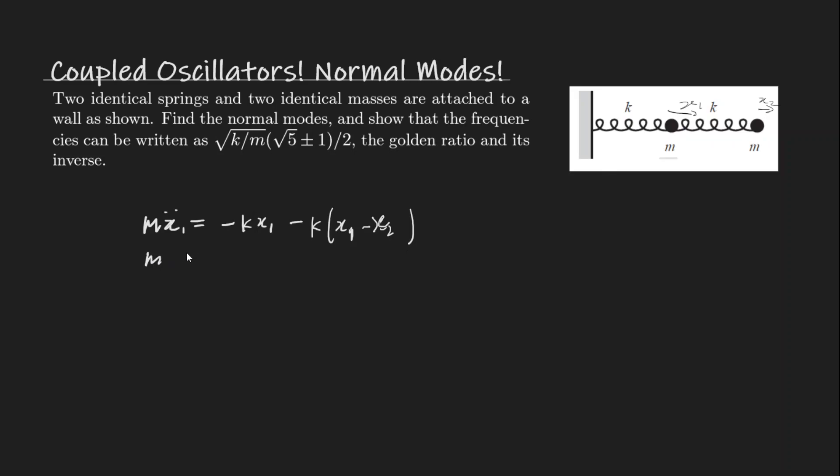And our equation of motion for x2 is mx2 double dot is equal to, well, all it is is just going to be this one but negated, right? Because it's going to be pulling when x2 is positive. This could be minus k times x2 minus x1. So from here, we can solve.